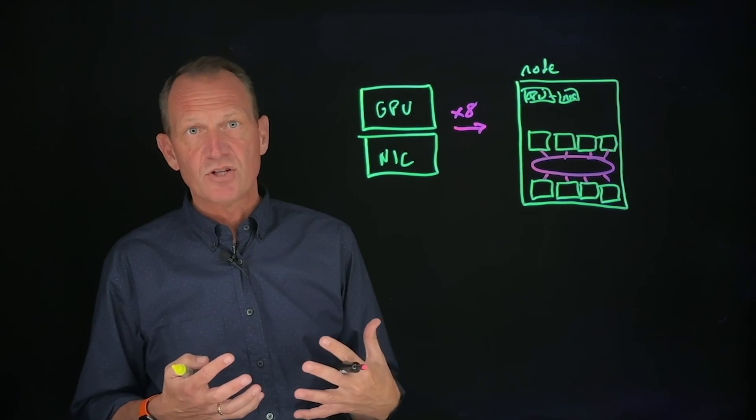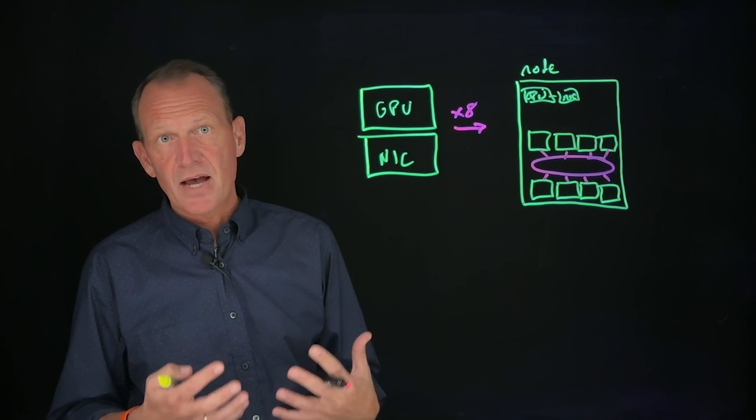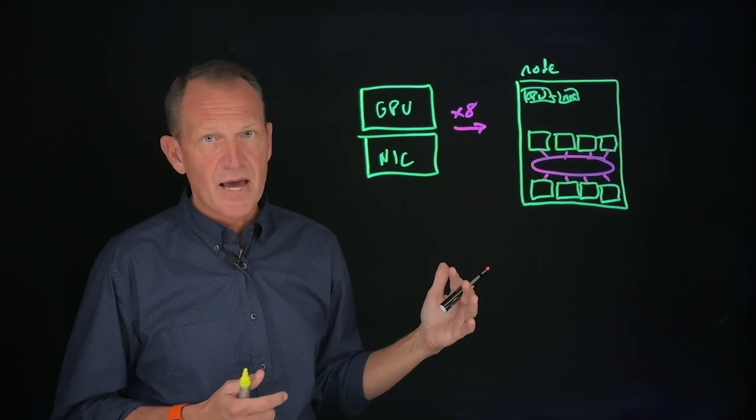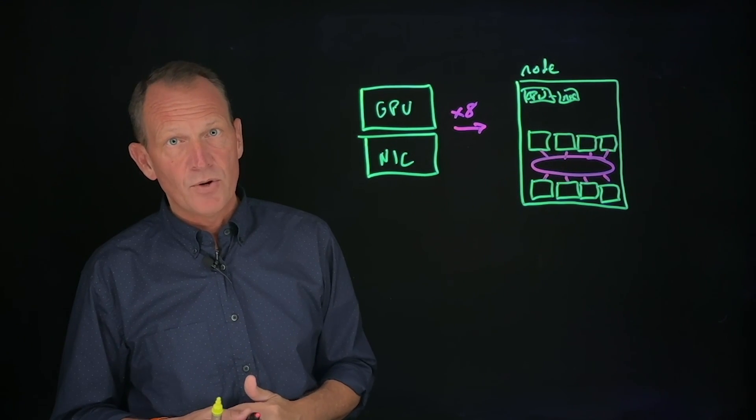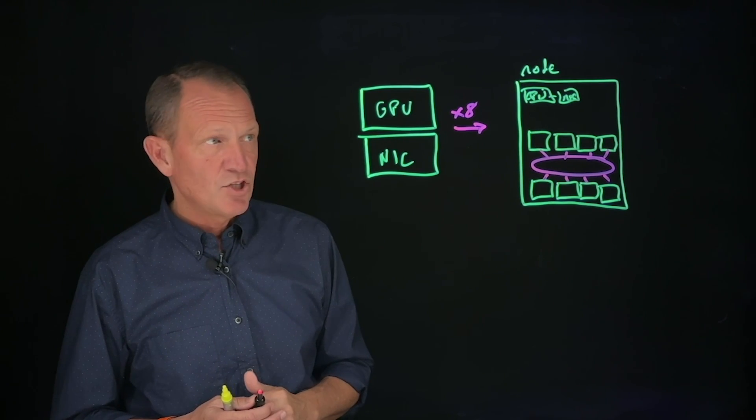It effectively allows us to pool the memory and make forwarding decisions inside the node so that if one GPU needs to communicate with another, it doesn't need to use the backend network. It can communicate with the GPU inside the node at a very high rate of speed, much faster than the PCI connection.